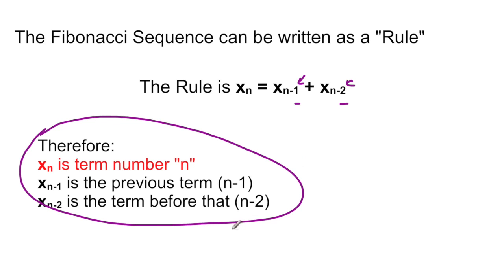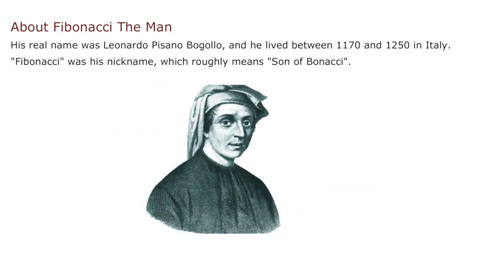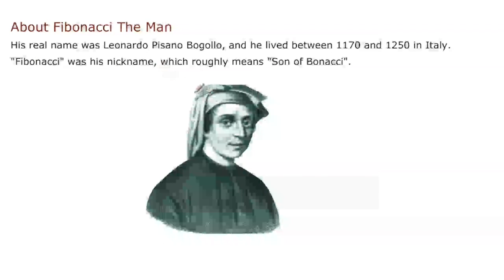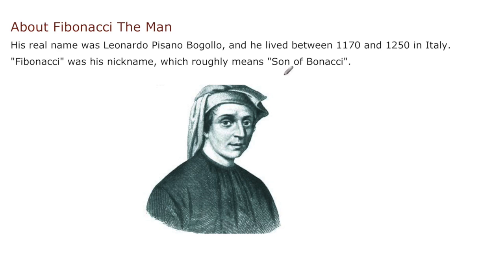Before we end, let's take a look at Fibonacci the Man. Being of Italian origin, I enjoy looking at anything Italian. His real name was Leonardo Pisano Bogollo. He lived between 1170 and 1250 in Italy. Fibonacci is not his name.